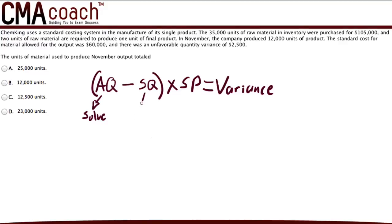Now, the standard quantity, to calculate that, we take the number of units produced, which is 12,000 units, and we multiply it by the number of raw material units that we need. And that's two per unit produced. So that gives us 24,000 raw units.